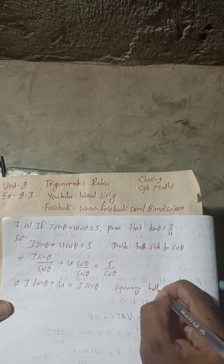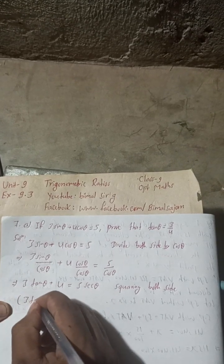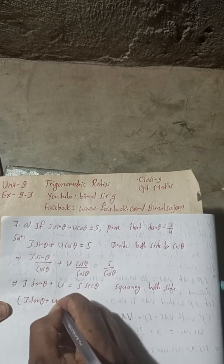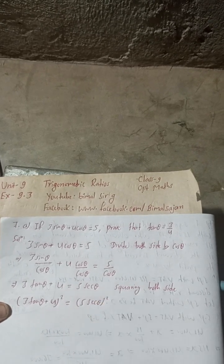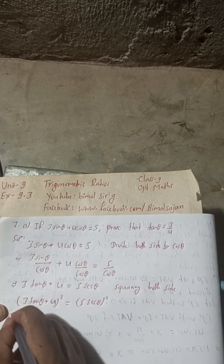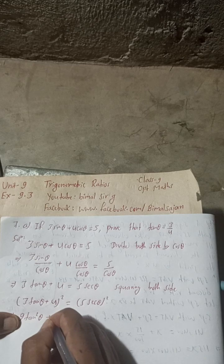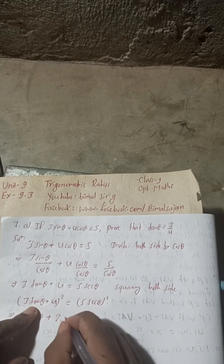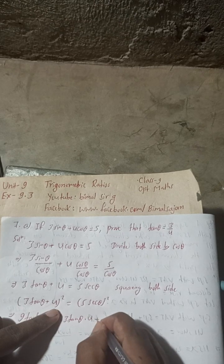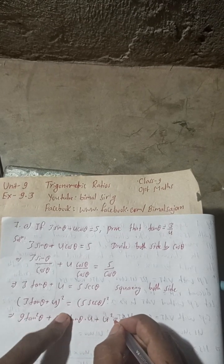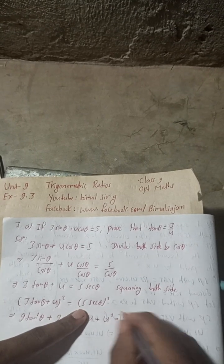Now square both sides. Squaring both sides: the left side is (3 tan θ + 4)² and the right side is (5 sec θ)², which gives 25 sec² θ.